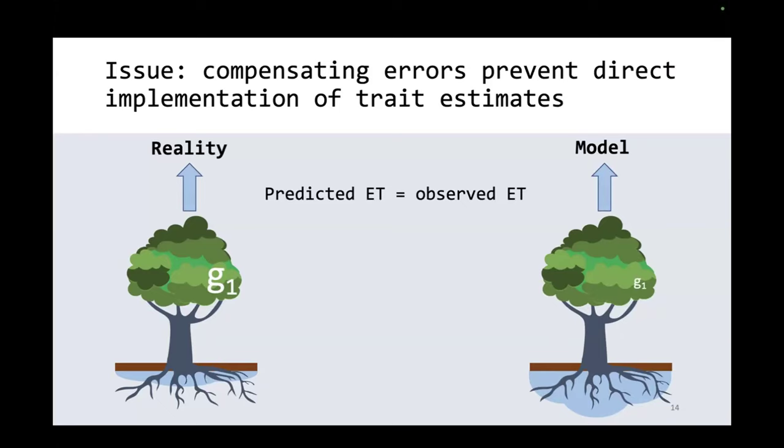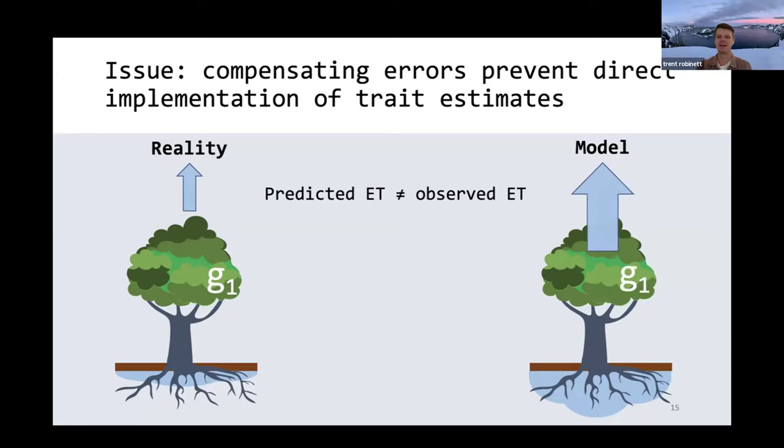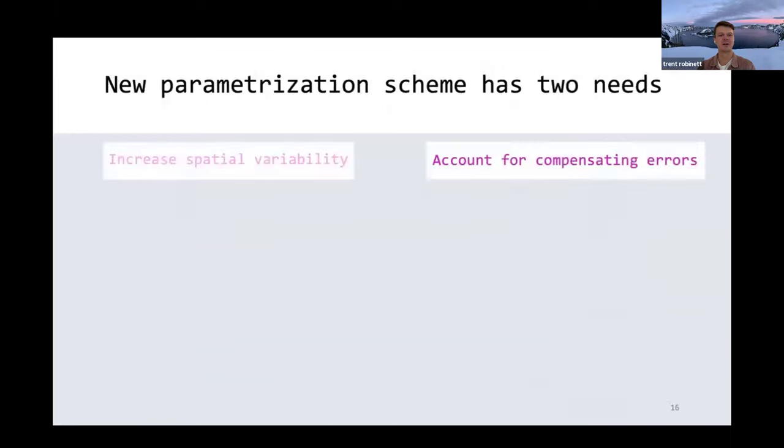So if we were to take our g1 value from reality and directly put it into the model, we'd actually end up hurting our model predictions of the flux that we care about. If we want to achieve this goal of moving beyond plant functional types and better representing vegetation spatial diversity, we really have two things we need to be able to do with our new parameterization scheme.